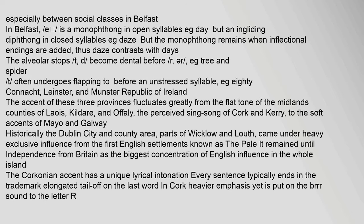The accent of the provinces of Connacht, Leinster, and Munster in the Republic of Ireland fluctuates greatly, from the flat tone of the Midlands counties of Laois, Kildare, and Offaly, to the perceived sing-song of Cork and Kerry, to the soft accents of Mayo and Galway. Historically, the Dublin city and county area, parts of Wicklow and Louth, came under heavy exclusive influence from the first English settlements known as the Pale. The Corkonian accent has a unique lyrical intonation, with every sentence typically ending in a trademark elongated tail-off on the last word.